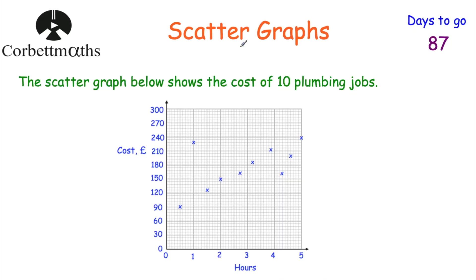Today we're going to look at how to plot points on scattergraphs, correlation, lines of best fit, how to use lines of best fit, and when we have to be careful using lines of best fit. Here we've got a scattergraph showing the cost of ten plumbing jobs. For instance, this point: the job lasts half an hour and costs £90; this job lasts five hours and costs £240; this point is a two-hour job costing £150, and so on.